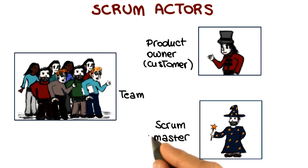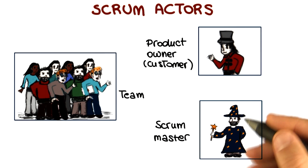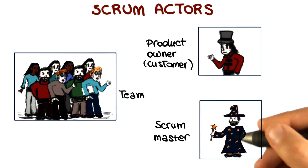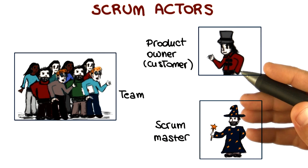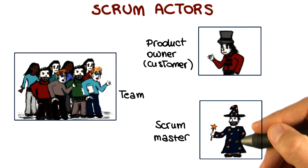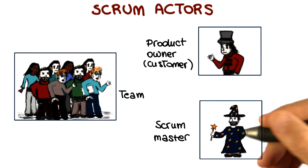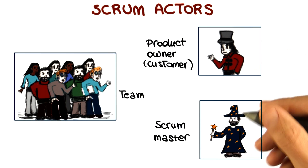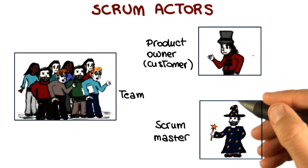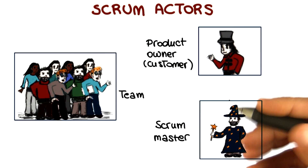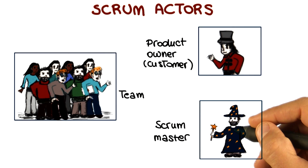Finally, we have the Scrum Master. The Scrum Master is the person who is responsible for the overall Scrum process. He or she has to remove obstacles, facilitate events, and help with communications. You can see the Scrum Master as sort of the manager, or the person who has oversight, the supervisor of the Scrum process.